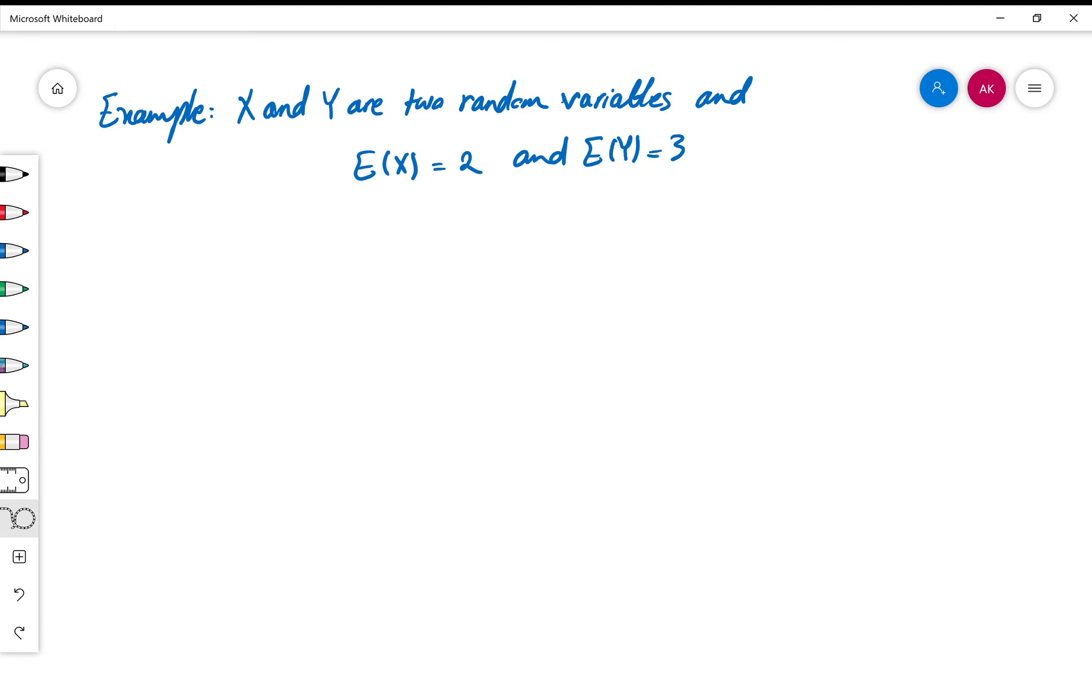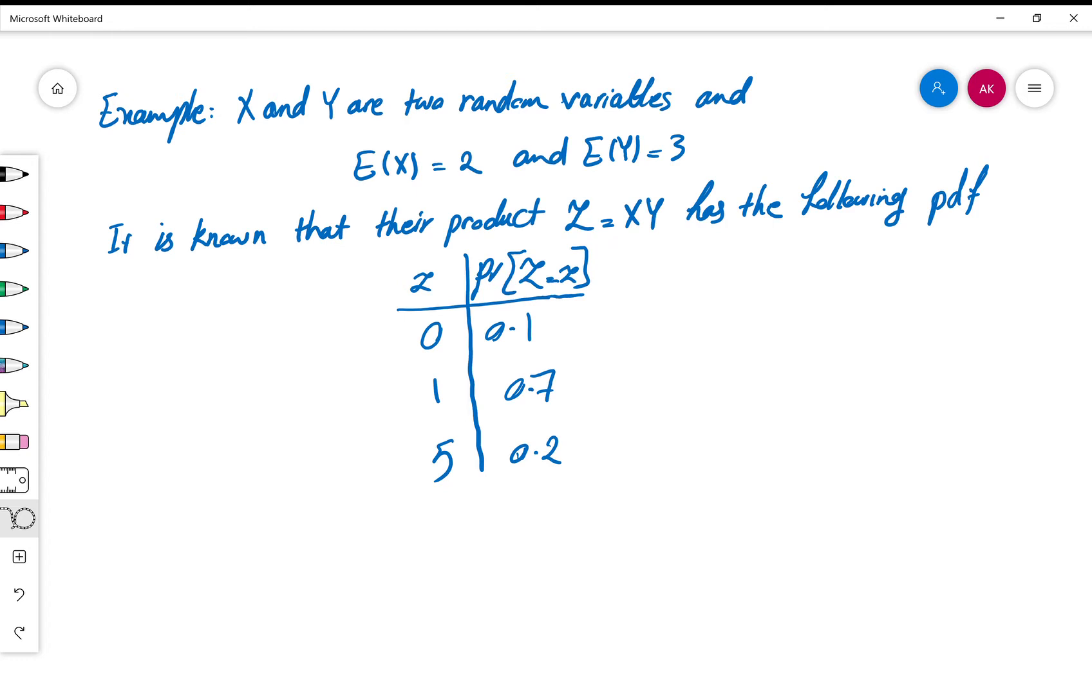Hi, in this video I will teach you how one can use the formulas for E(XY) to show that two random variables are not independent. Let's see the example: X and Y are two random variables, and E(X) equals 2 and E(Y) equals 3.